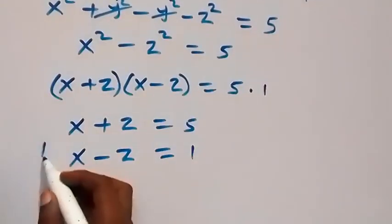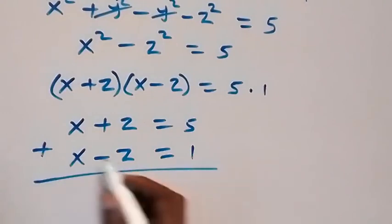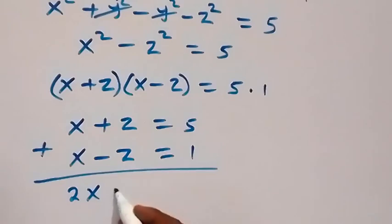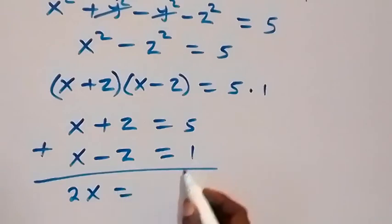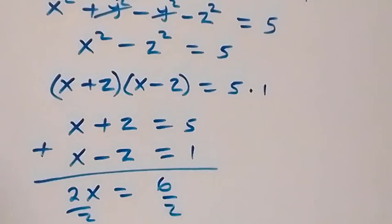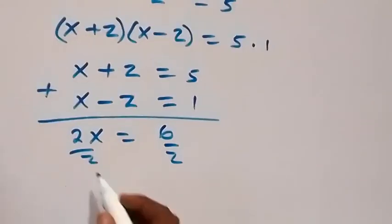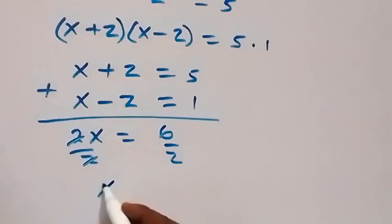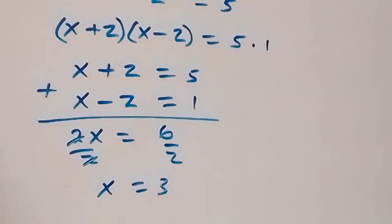From here we can solve this system by adding the two equations to eliminate z. So x plus z plus x minus z gives 2x equals 5 plus 1, which is 6. Dividing both sides by 2, the 2s cancel and x equals 3.